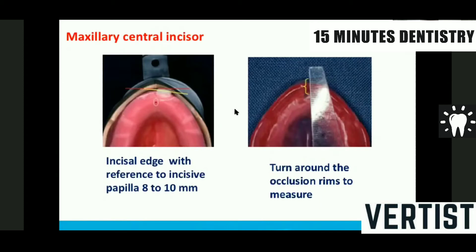We turn around the occlusal rim and mark the incisor papilla, because in the impression the incisor papilla is captured in the denture base. From the center of the incisor papilla, 8–10 mm, the labial position of the central incisor should not cross this 10 mm.